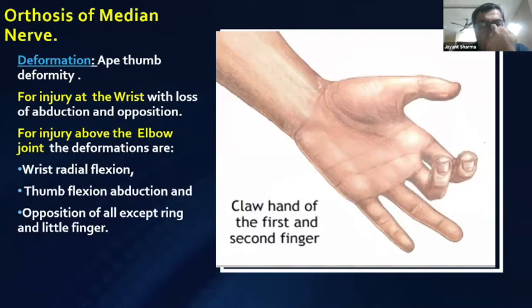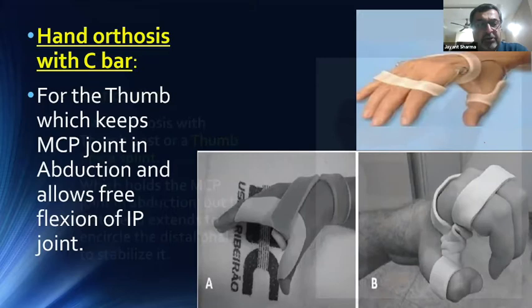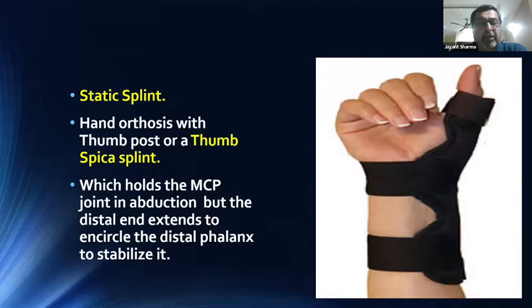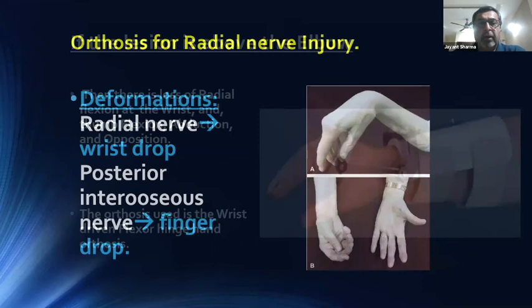For the median nerve, the main deformity is the ape thumb deformity, and this orthosis is mainly used for injury at the wrist. For injury above the elbow joint, deformities include loss of radial flexion, thumb flexion, abduction, and opposition of all fingers except ring and little. The orthosis is a hand orthosis with C bar — a modification of the knuckle bender type — keeping the MCP joint in abduction and allowing free flexion of the IP joint. A static thumb spica splint holds the MCP joint in abduction, extending to the distal phalanx. For region above the elbow, a wrist-driven flexor hinge orthosis is used.